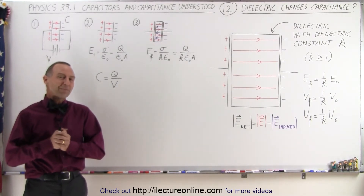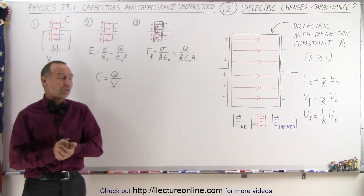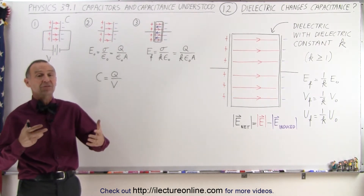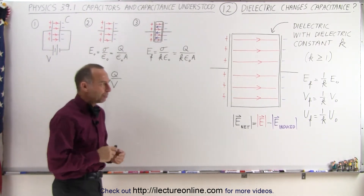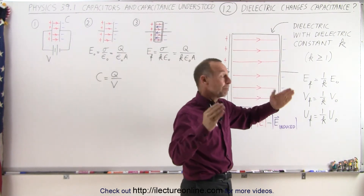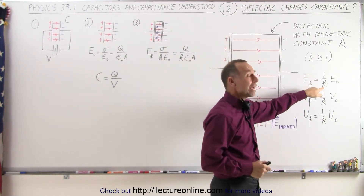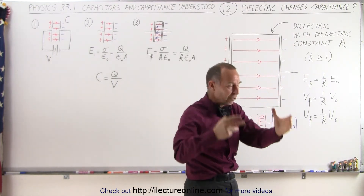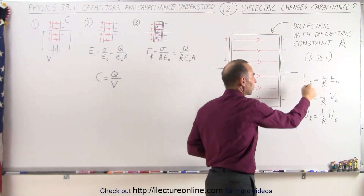Welcome to ElectronLine, and finally for the big question: how does the dielectric affect the capacitance of a capacitor? In the previous video we noted that the electric field between the plates changes by a factor of 1 over k — in other words, gets reduced — when you insert a dielectric with dielectric constant k.